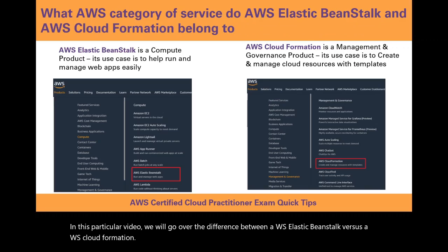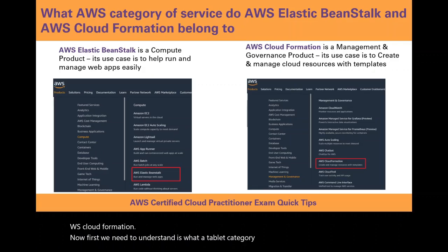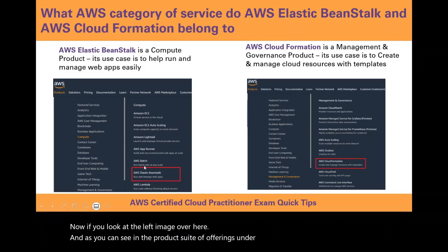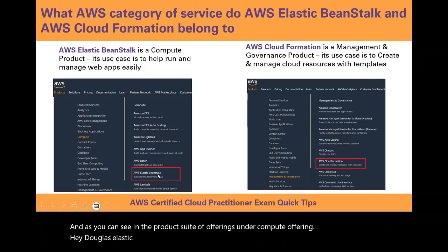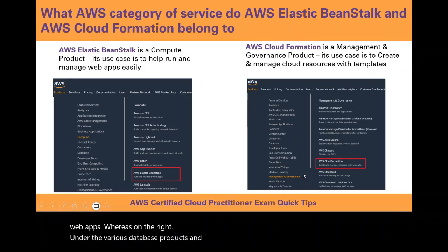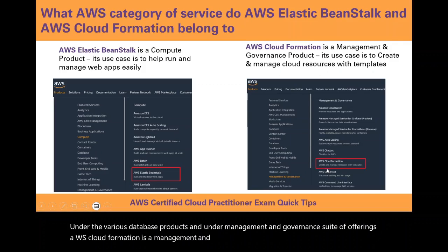First we need to understand what AWS category of service Elastic Beanstalk and AWS CloudFormation belong to. Looking at the left image, under the compute offerings, AWS Elastic Beanstalk is a compute product and its use case is to help run and manage web apps. Whereas on the right, under management and governance offerings, AWS CloudFormation is a management and governance product and its use case is to create and manage resources with templates.